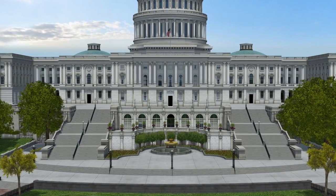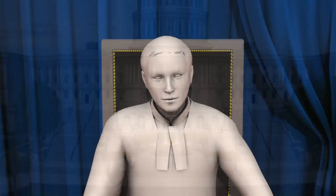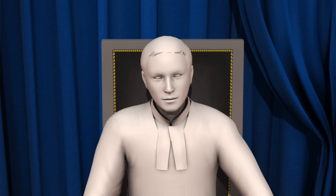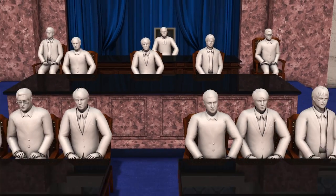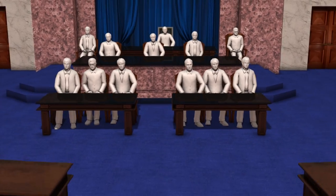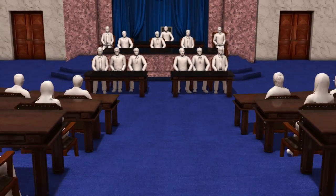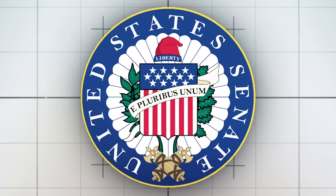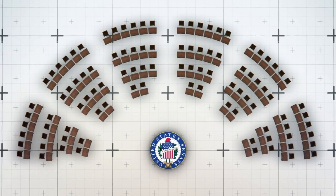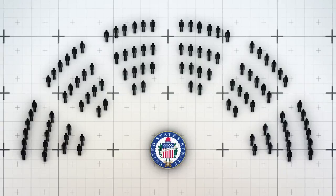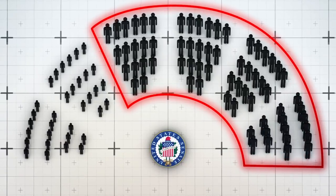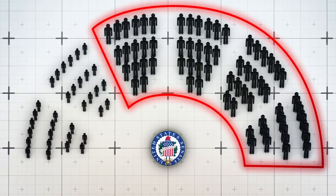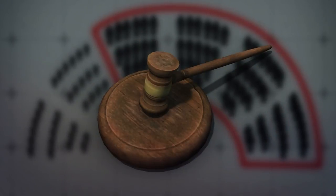From there, the proceedings move to the Senate for a trial presided over by the Supreme Court Chief Justice, with the Senate acting as jury. In order to get a conviction, a supermajority, or two-thirds of the senators, must find the official guilty. Once convicted, he is immediately removed from office.